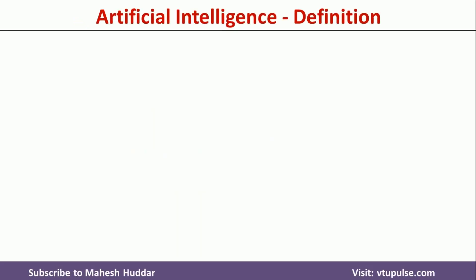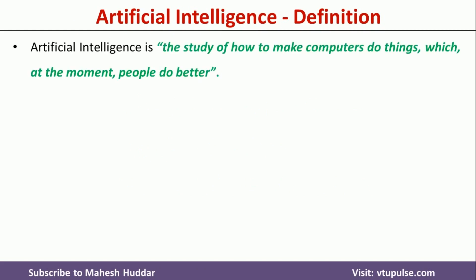Artificial Intelligence has many definitions. We will start with one such definition: Artificial Intelligence is the study of how to make computers do things which at the moment people do better. The meaning of this is we have to incorporate human intelligence into the computer so that computers can do things like human beings. That is what Artificial Intelligence is about.